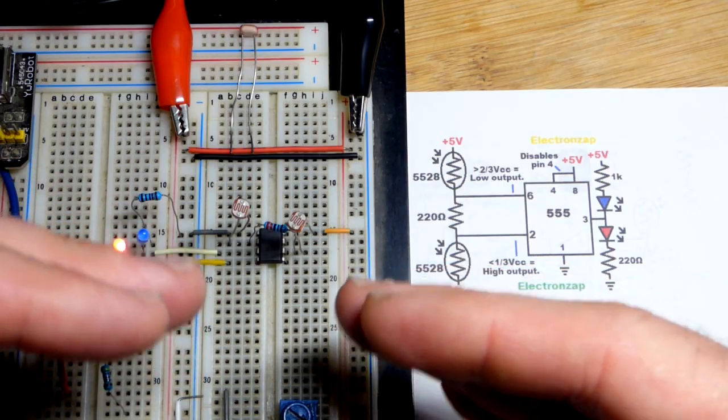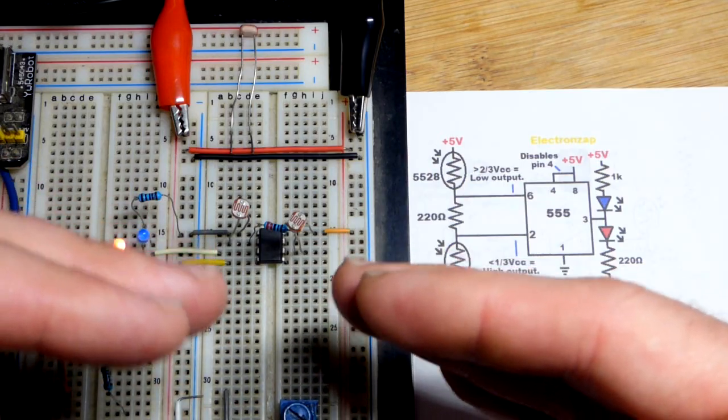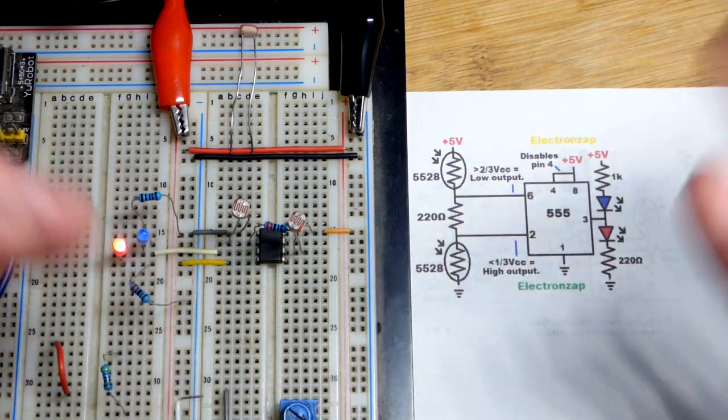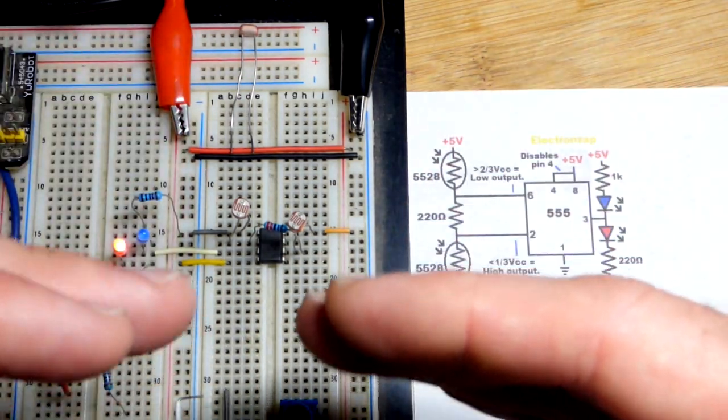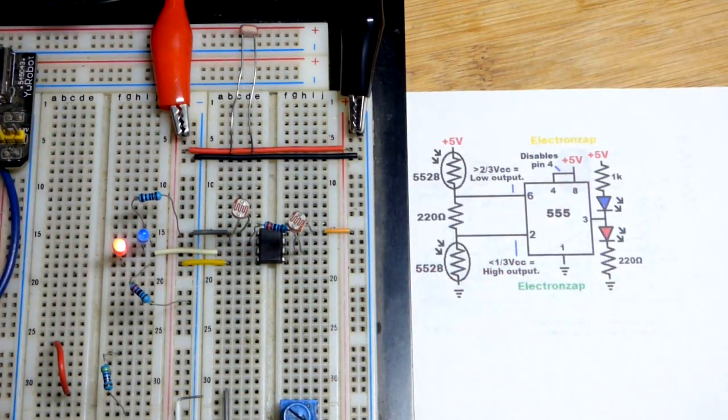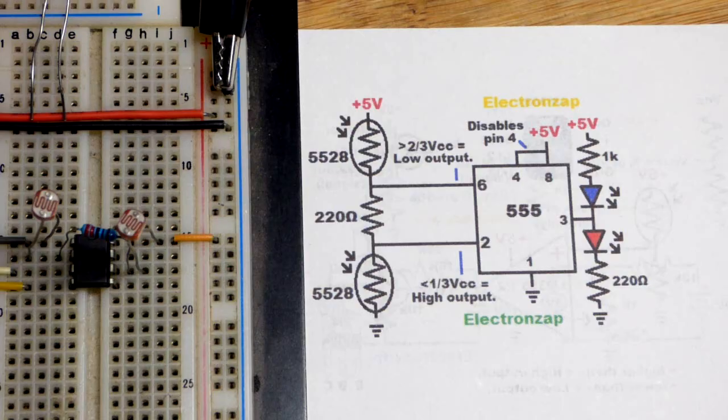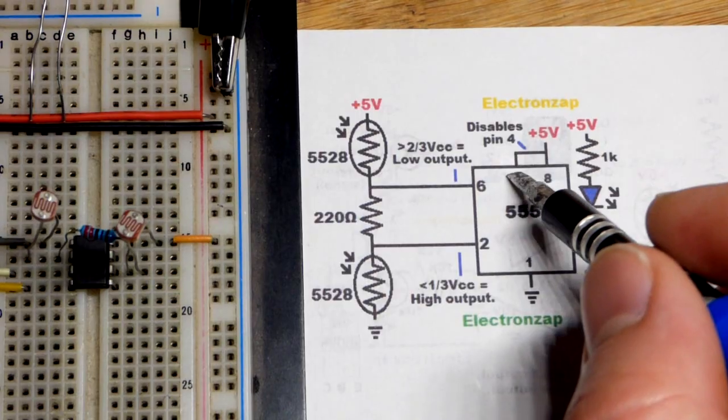But as long as they're close to equal then it will stay in whatever state it was last put into. And that's very useful because when they are about equal, sometimes one might just be a little more than the other. The light may not be perfect, it may be kind of changing a little bit, and then this would just be flickering like crazy and we don't want that.